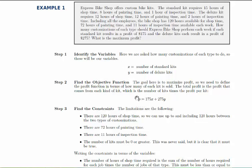So you always want to define your objective function in terms of your variables x and y. Thinking this through, the total profit is how much profit they get from the standard kits plus the profit they get from the deluxe kits. And if they make x standard kits, the total profit from standard kits is 175, the profit from each one, times the number they make.